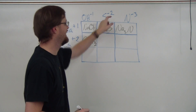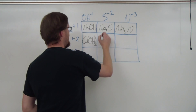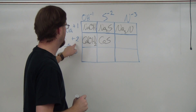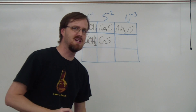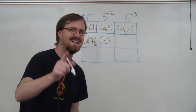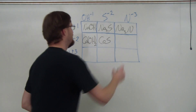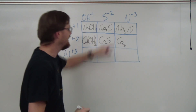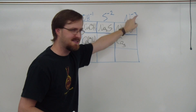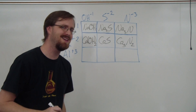Next up: calcium and sulfur. They already add up to equal zero, so we just need one of each — that is CaS. Next category: calcium plus two and nitrogen negative three. We have a two and a three. Our lowest common multiple is six. So in order for the positive two to become a six, I need three of these — Ca3. And then I need two of my nitrogens to make that a negative six. Our formula is Ca3N2.